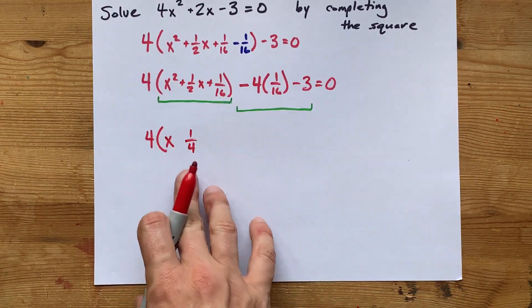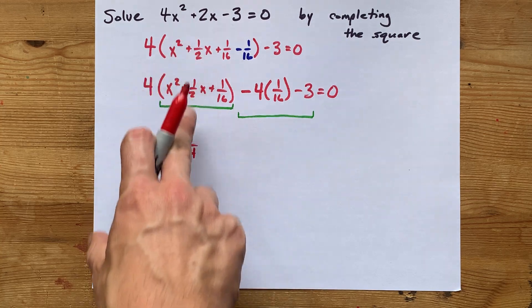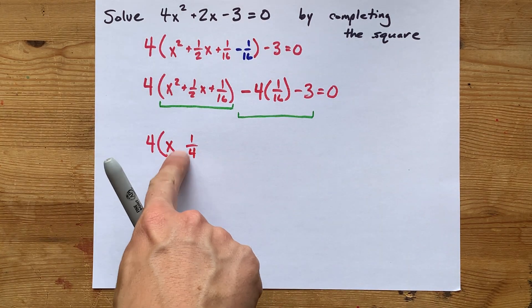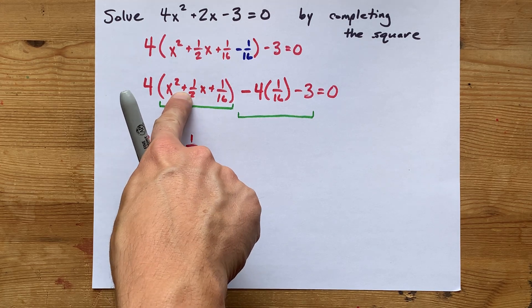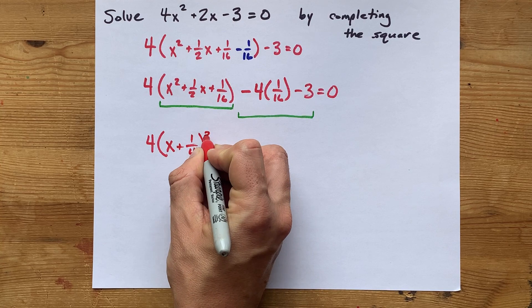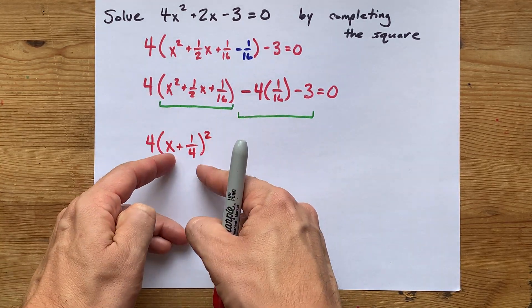P.S. That number is always going to be half of the original thing here. Half of a half was 1 quarter. Remember we said that? And then the sign in between them matches this sign here. That's a plus sign. And then wrap that in brackets and square it. So, this here turns into that.